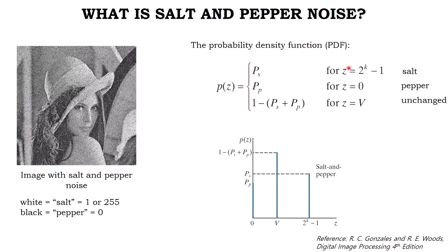The first case is the maximum pixel value, which is the white color or salt noise — it has a probability equal to ps. The second case is the minimum pixel value, which is zero or the pepper noise — it has a probability equal to pp. The last case equals the original image pixel value, or the pixel not corrupted by noise. The ps and pp determine the amount of image corrupted by the noise, and the combination of ps and pp is often referred to as noise density.